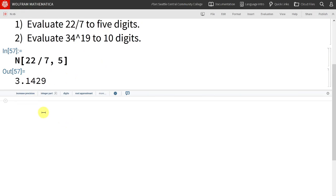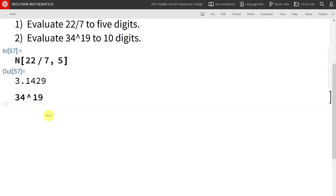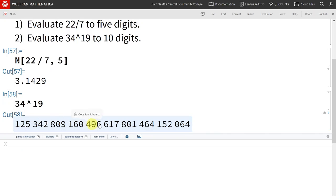Mathematica can also evaluate large numbers, like 34 raised to the 19. If we type that in, again, we will see a lot of digits here. Maybe we don't want something quite so large and unwieldy to look at.